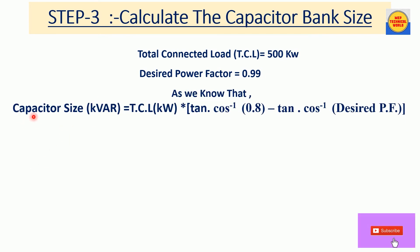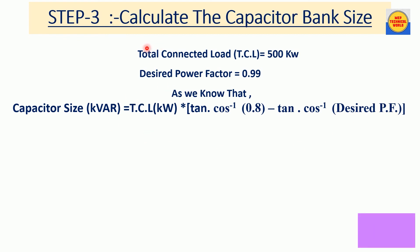The formula for capacitor bank size, rated in kVAR, is: kVAR = total connected load × [tan(cos⁻¹ 0.8) − tan(cos⁻¹ desired power factor)]. Here 0.8 is the reference power factor value we always use.